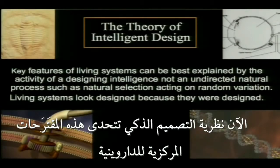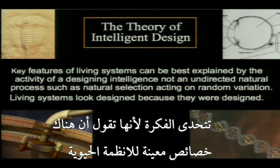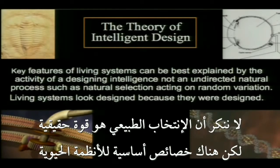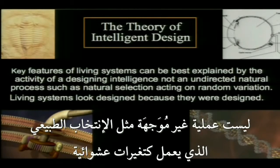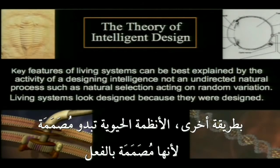The theory of intelligent design challenges this central proposition of Darwinism. It challenges the idea because it says that there are certain key features of living systems — not all things, we don't deny that natural selection is a real force — but there are certain key features of living systems that can be better explained by the activity of a designing intelligence, not an undirected process such as natural selection acting on random variation. In other words, living systems look designed because they were designed.